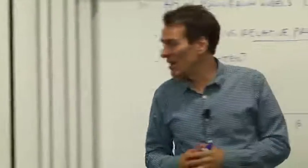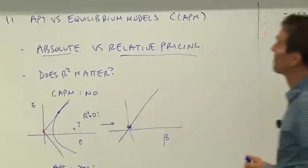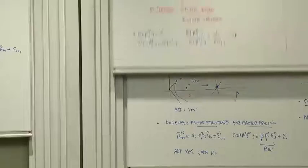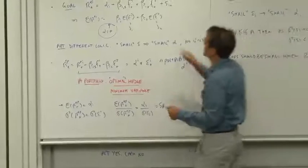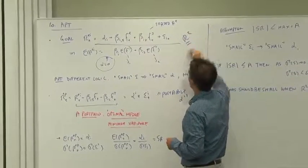One way of thinking about the difference between the models: does the R squared matter? So in our underlying time series regression, this regression here of returns on factors, that regression has an R squared with it.